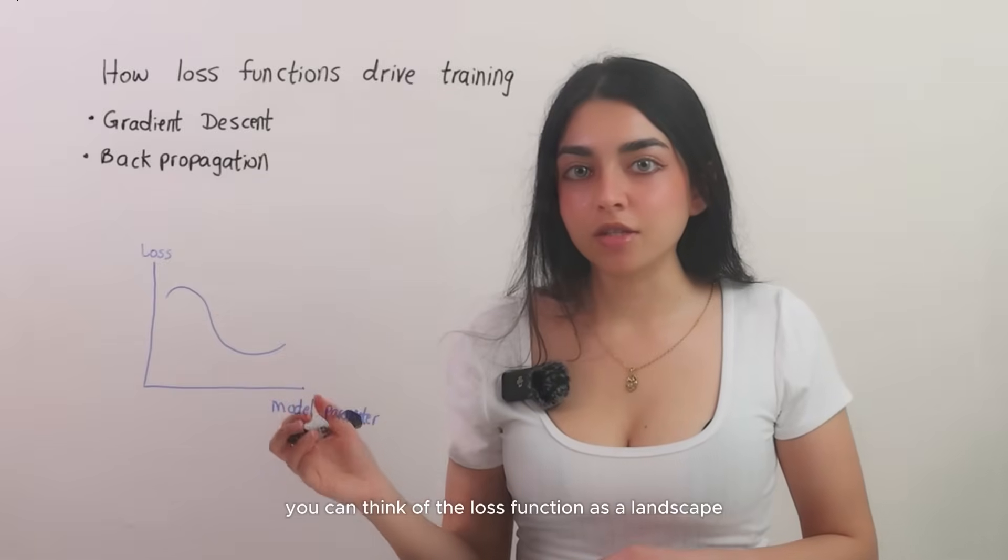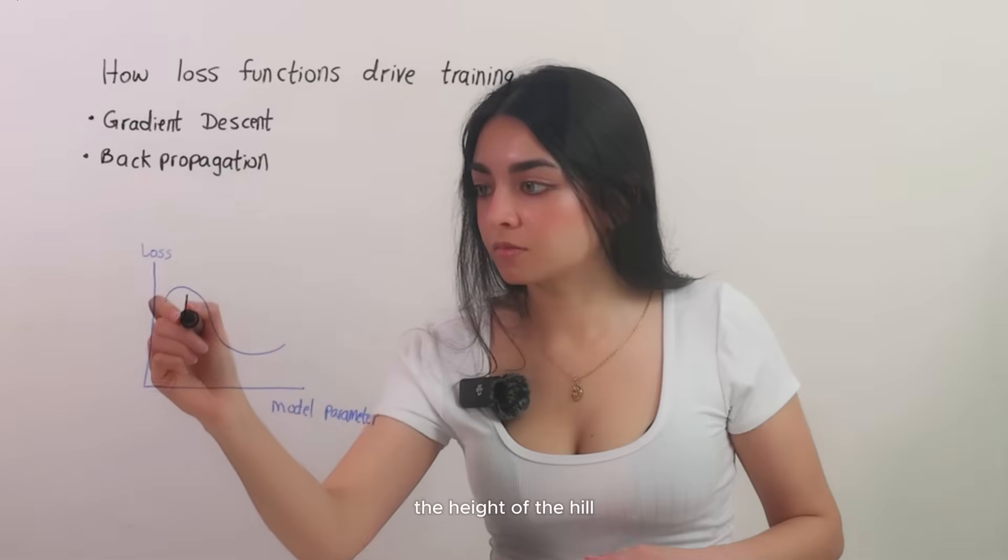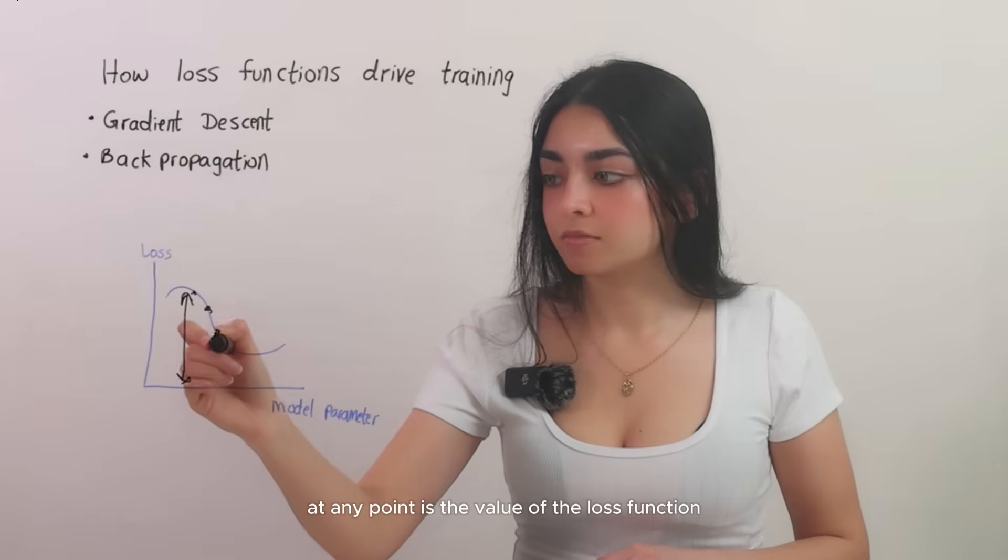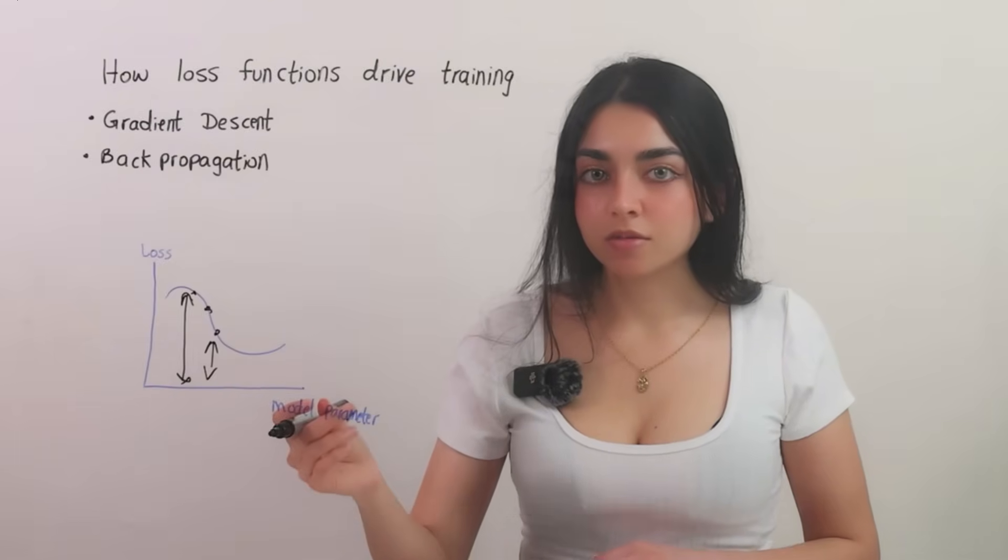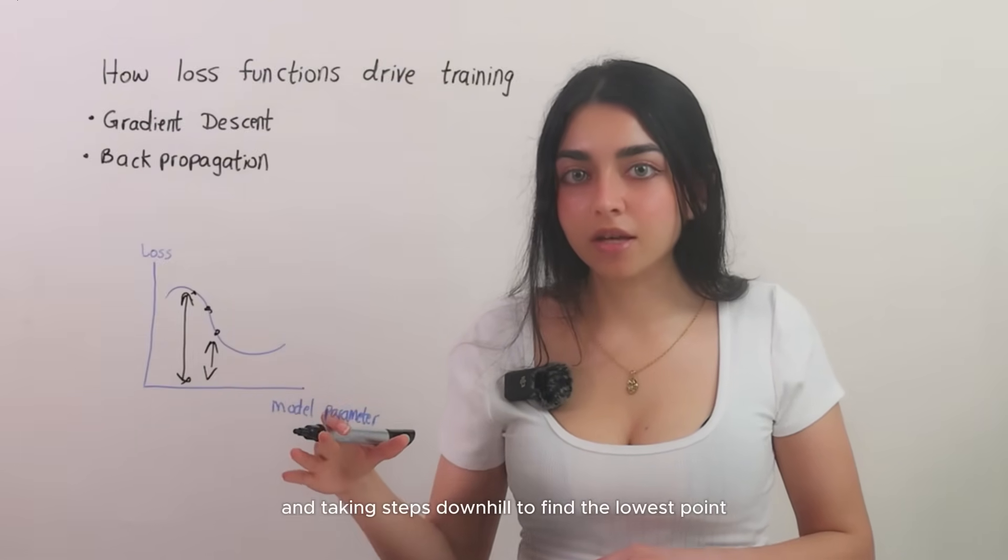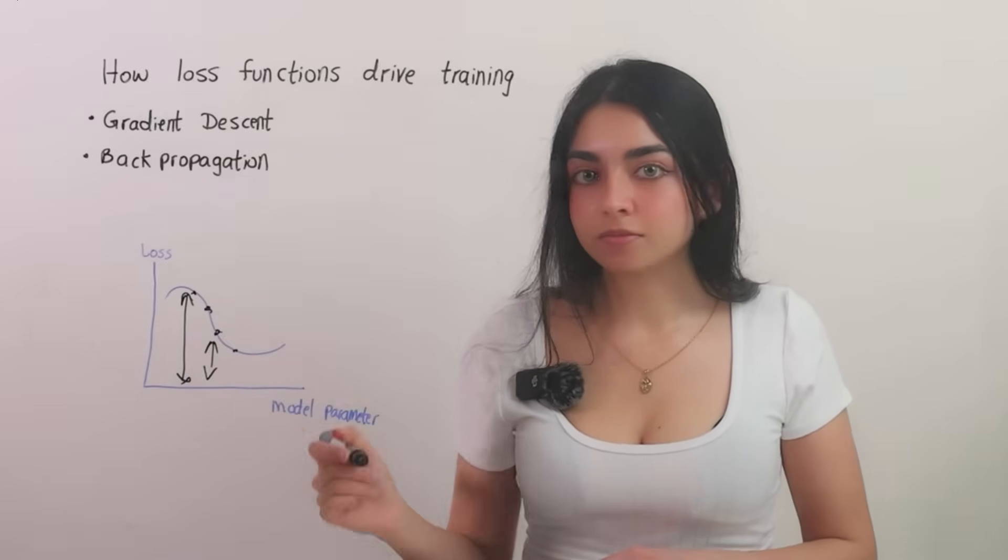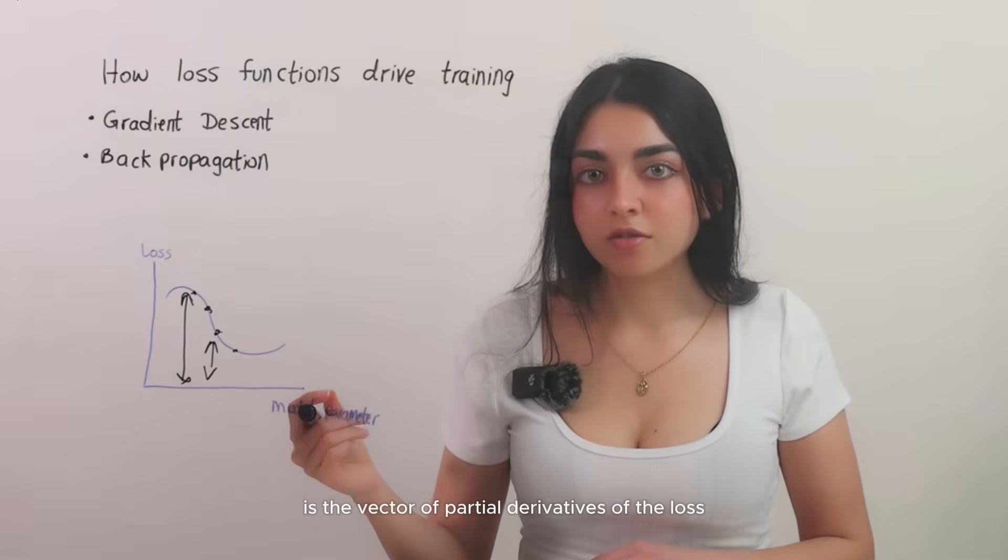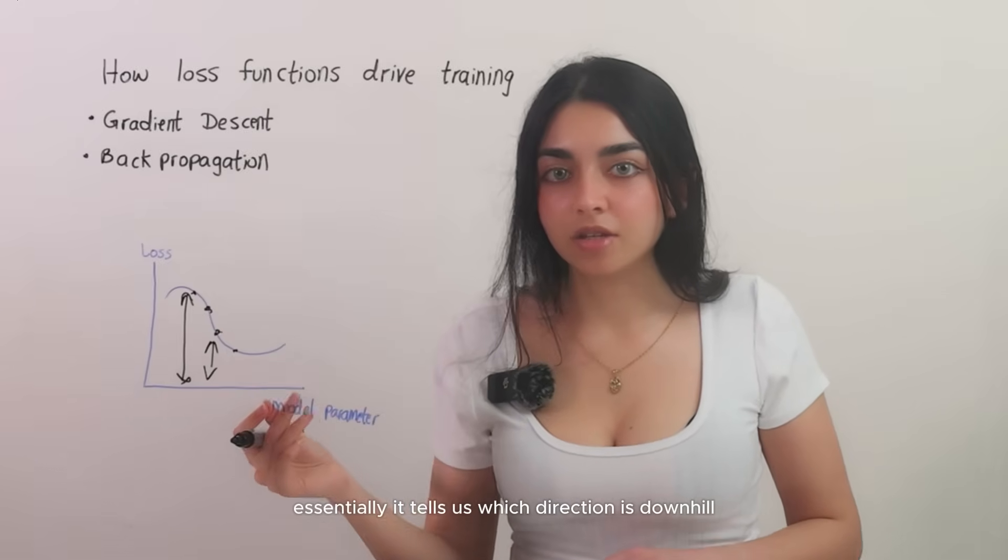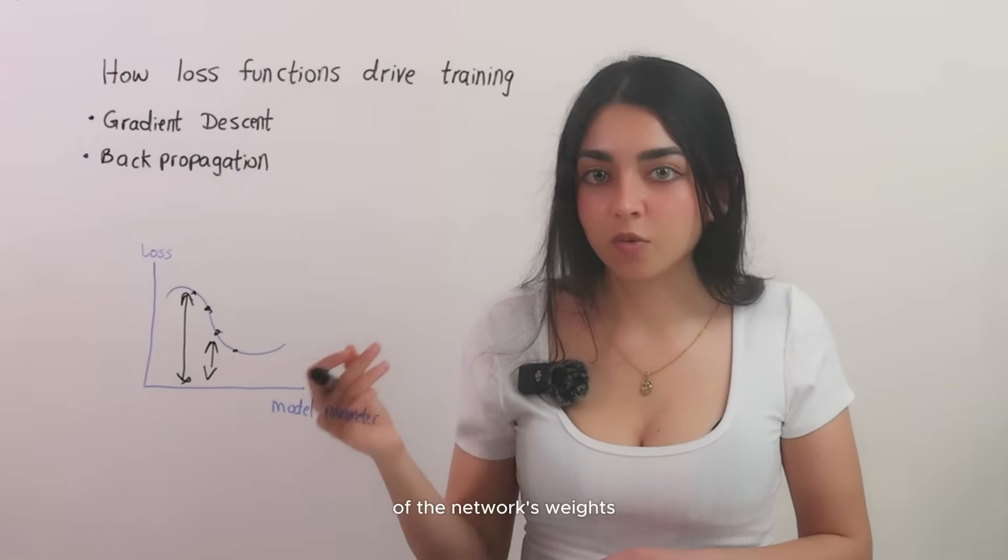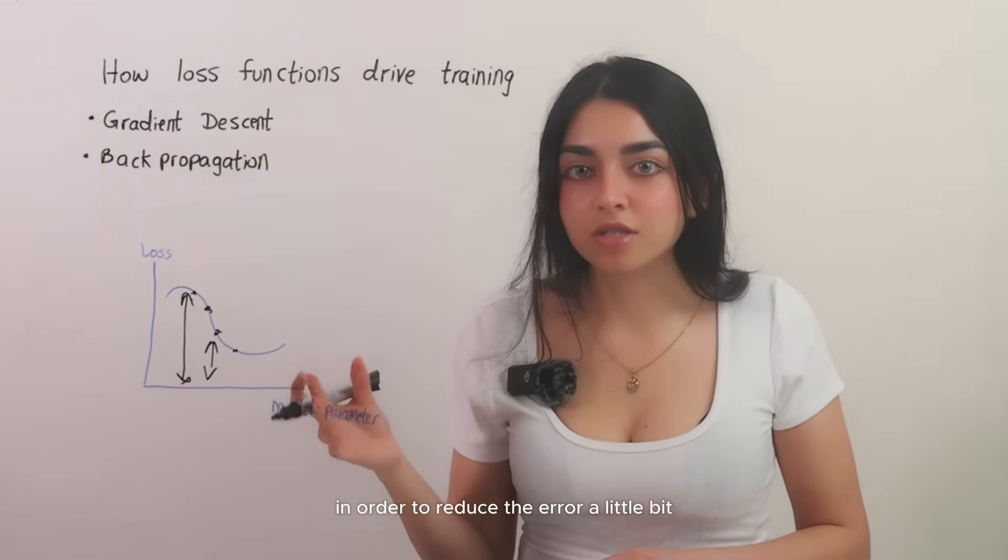You can think of the loss function as a landscape or a hill that the training process wants to get down from. The height of the hill at any point is the value of the loss function, or how big the error is, for the current state of the model's parameters. Gradient descent is like feeling the slope of the landscape and taking steps downhill to find the lowest point, or the minimum loss. The gradient is the vector of partial derivatives of the loss with respect to each parameter. Essentially, it tells us which direction is downhill in the higher dimensional space of the network's weights. By computing the gradient of the loss, we know how to adjust each weight in order to reduce the error a little bit.